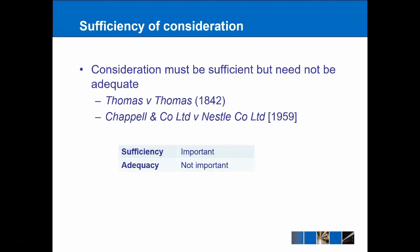The idea is that there has to be some consideration, but the courts are not going to look into the bargain itself and determine whether it is a fair contract between the parties. That makes a lot of sense — for example, with a contract to buy a piece of art, the courts are not really interested in whether the Mona Lisa is actually worth £130 million. They just want to know that there is an agreement between the parties, and they'll leave it to the parties themselves to work out how much they think different things are worth.